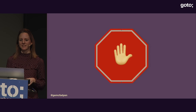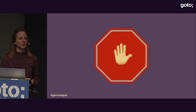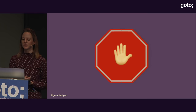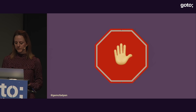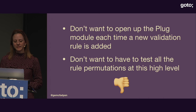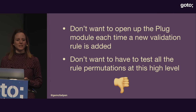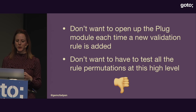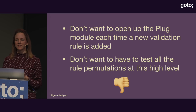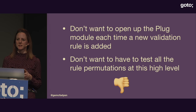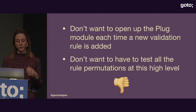But wait — the Open-Closed Principle says we should be able to add new code without modifying any existing code. And here we're modifying existing code: we've updated the `with` statement and had to add error handling. So we're violating the Open-Closed Principle. In a real production system you could have tens or hundreds of rules, and having to configure them and test all those permutations might be quite complicated.